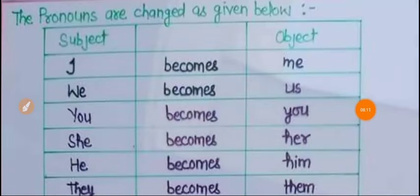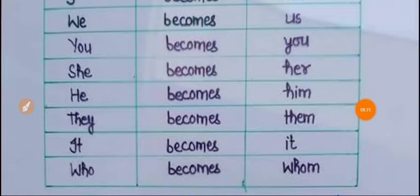Rule number 6: The pronouns are changed as given below. Passive voice میں pronouns اس طرح بدلیں گے: I → me, We → us, You → You, She → her, He → him, They → them, It → it, Who → whom.